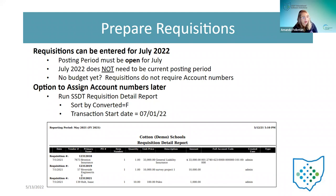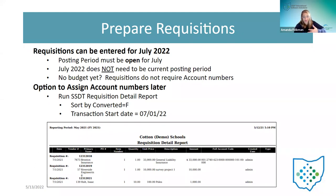Note from chat: if we're currently in May, to open July you have to open the periods in order — you'll need to open June first, then July. Posting periods must be created sequentially.